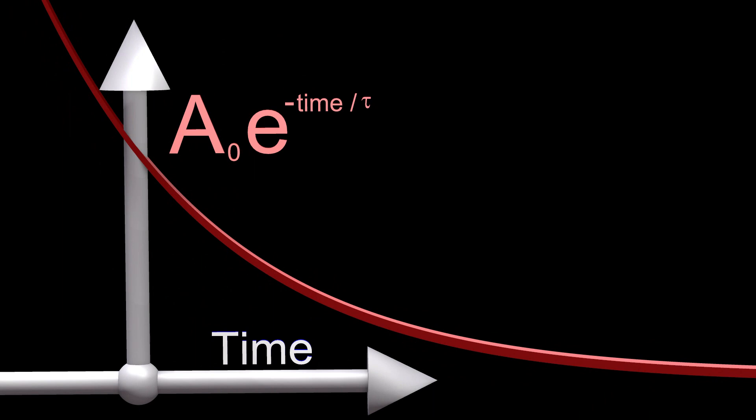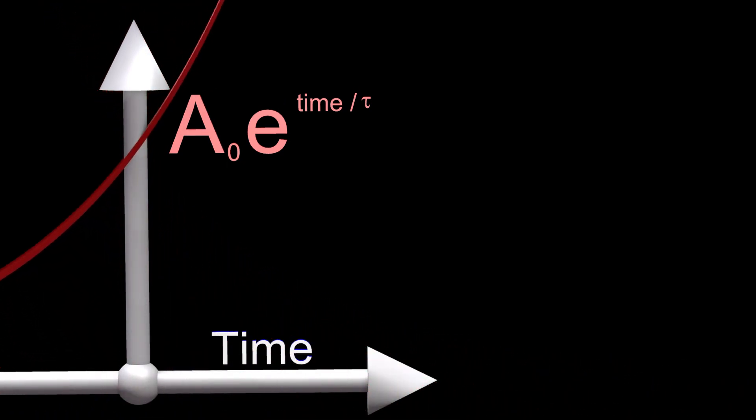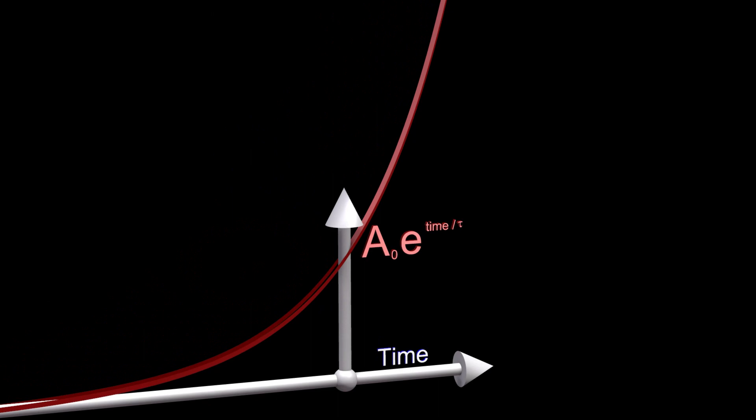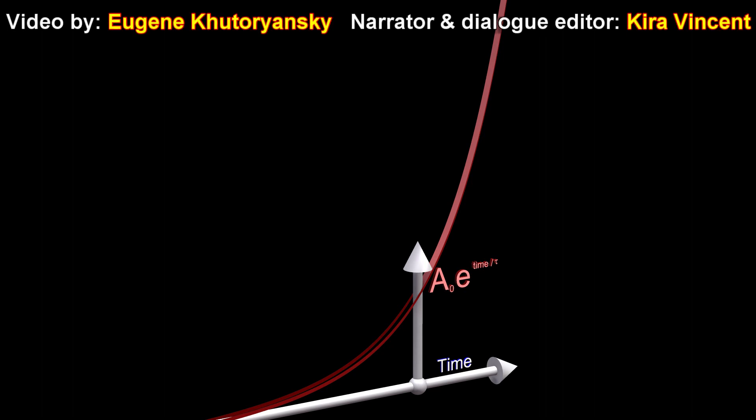The mathematical models also break down if we consider the opposite of exponential decay, which is exponential growth. This is discussed in the video titled Exponential Growth and Its Philosophical Implications.